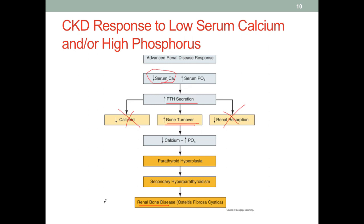This is why for dialysis patients, if we check their medications, they will often have a prescribed active form of vitamin D and a calcium supplement to mitigate this condition through feedback regulation — to manage renal bone disease through an indirect manner.